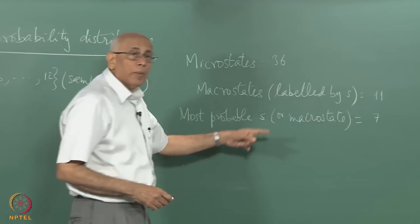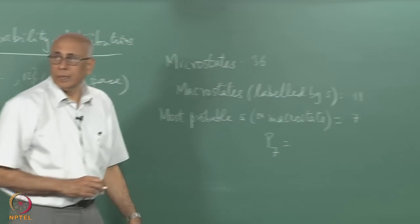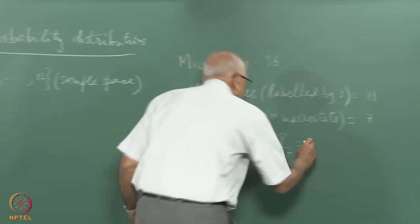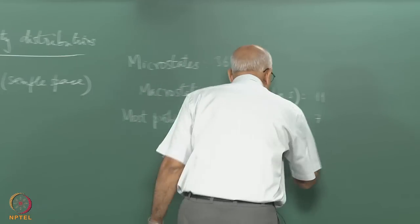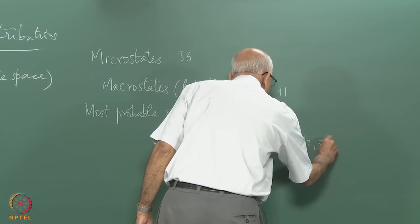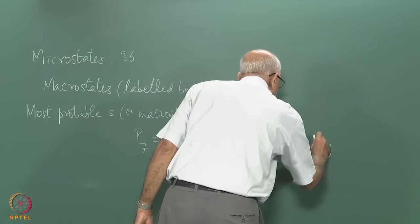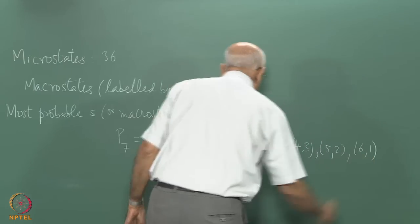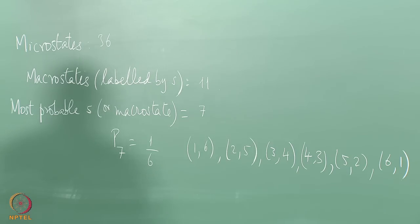What is P(7) equal to? The contributing microstates are: (1,6), (2,5), (3,4), (4,3), (5,2), (6,1) — six possible microstates. So six times 1/36 gives 1/6. For the formula for p sub s: when s is at its extreme value 2, there is only one contributing microstate (1,1); similarly for 12 it is (6,6). It increases and decreases once the peak is reached. So p sub s equals (1/36)(s−1) for s ≤ 7, and (1/36)(13−s) for s > 7.